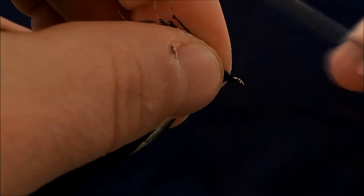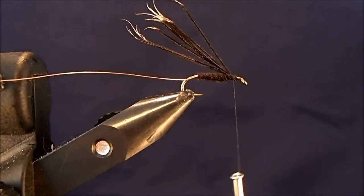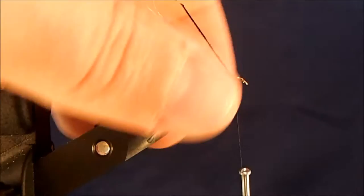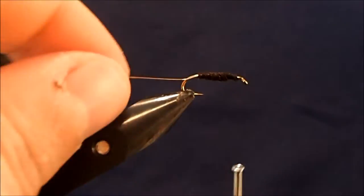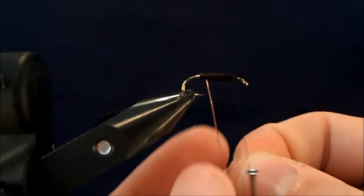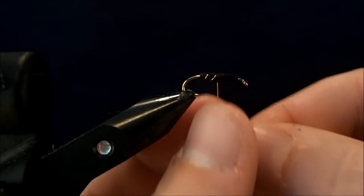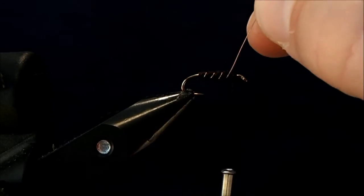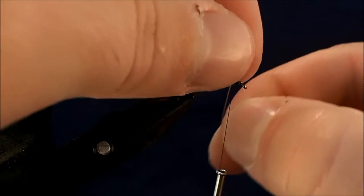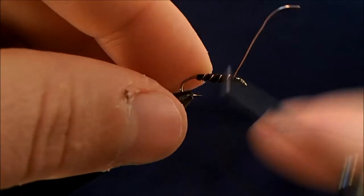And now that'll lock those fibers in. I can come back then and clean up the excess. Now I'll have a nice cross section when I start to wrap this copper wire. So I'm just going to take nice, even turns all the way up to the thorax. And tie that in.